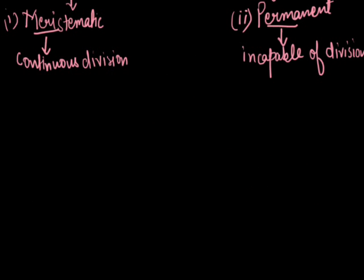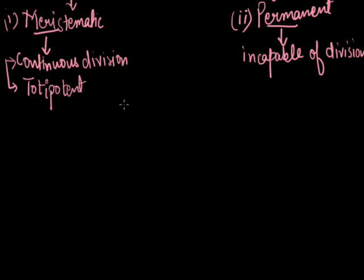One important point about meristematic tissue is that the cells are totipotent. Totipotent cells are those cells which have the power to divide continuously and form a mature whole body. Plant cells especially have the power of totipotency compared to animal cells. They have the power to regenerate or produce a new plant from a single part of the plant.